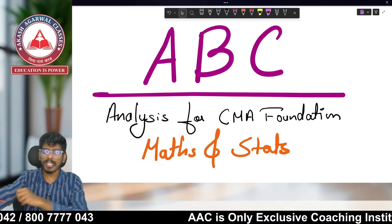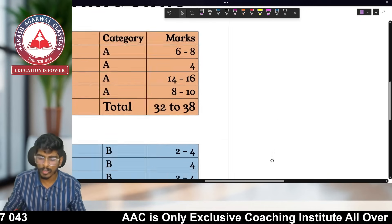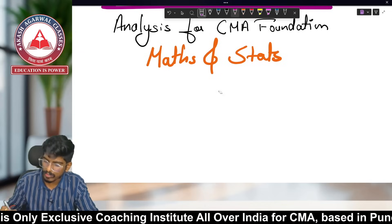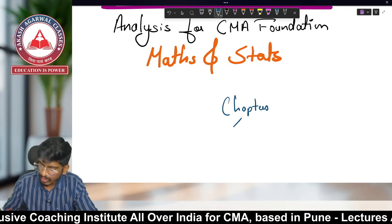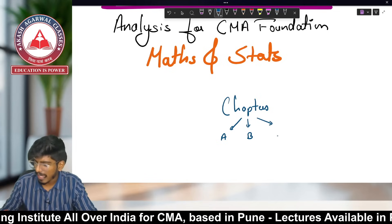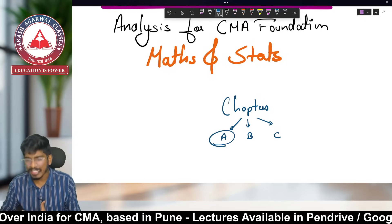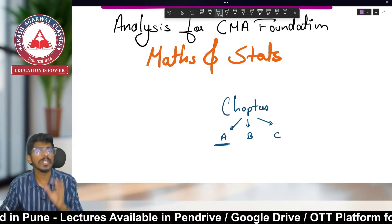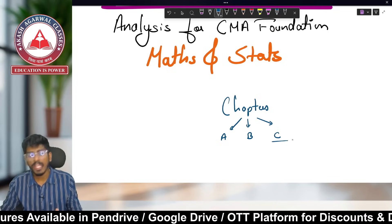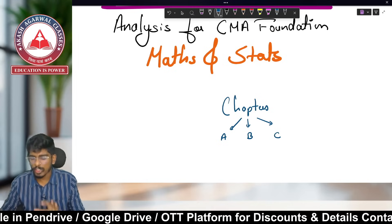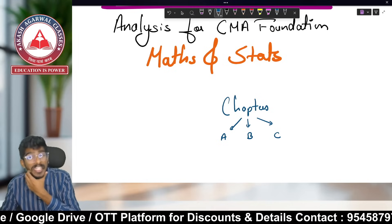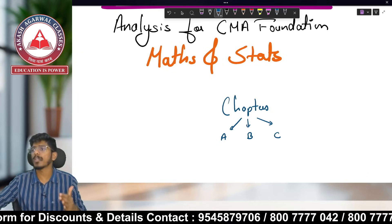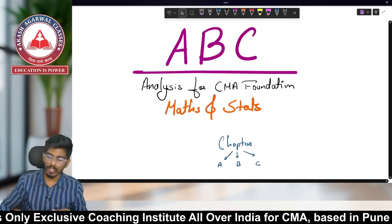Your ABC analysis for CMA Foundation Mathematics and Statistics is going to be as follows. We are going to categorize all your chapters into three parts: A, B, and C. Category A chapters are to be given the most priority, and Category C chapters are to be given the least priority. We will discuss weightages, which are lengthier, which are easier, and how to focus on each.